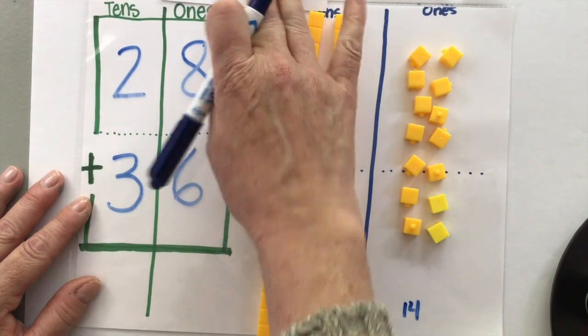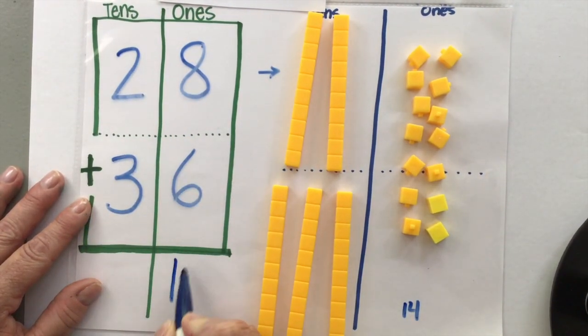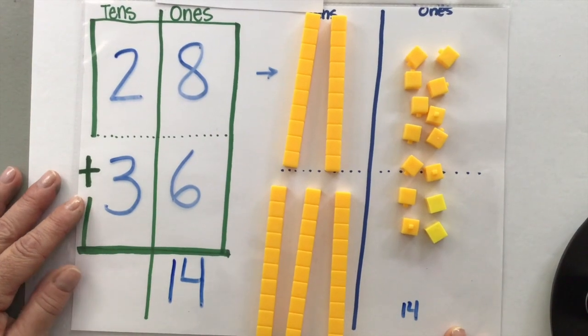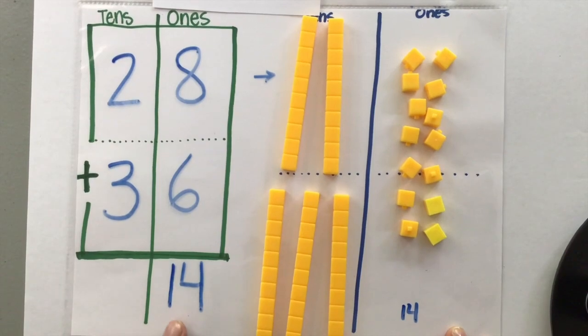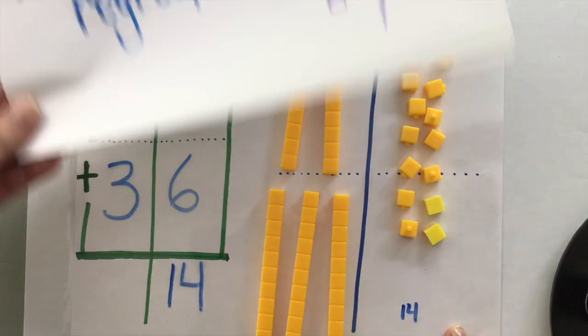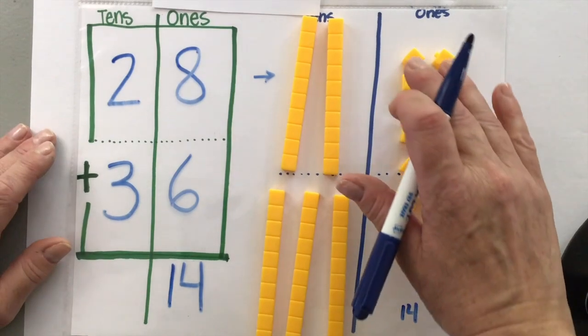So essentially in my ones column here, I have 14 ones. But we know that we can't write a two-digit number in this ones column. So because I have 14, I know that I can trade 10 ones for 1 ten. So let's do that.